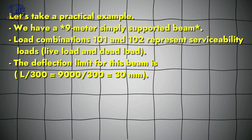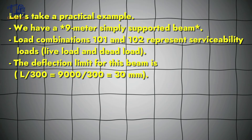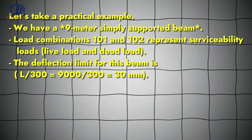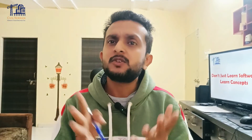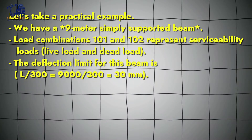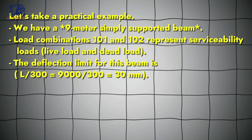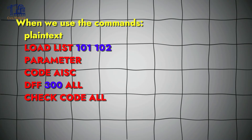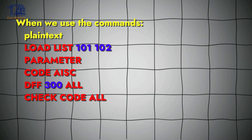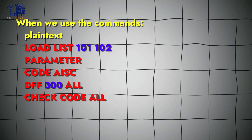Let's understand this with a practical example. We have a 9-meter simply supported beam and load combinations 101 and 102 representing serviceability loads. The deflection limit for this beam is L/300, which gives 9000/300 = 30 mm.